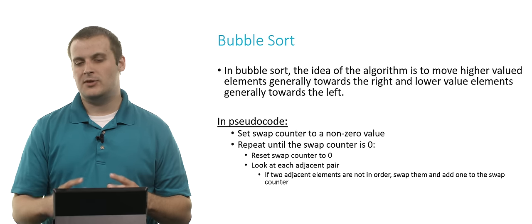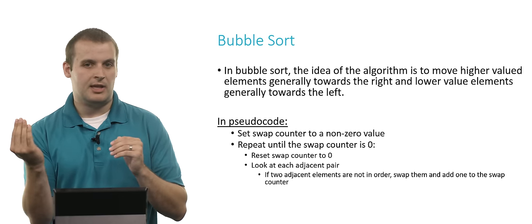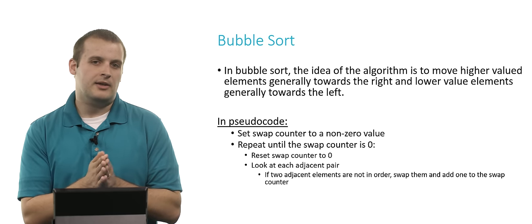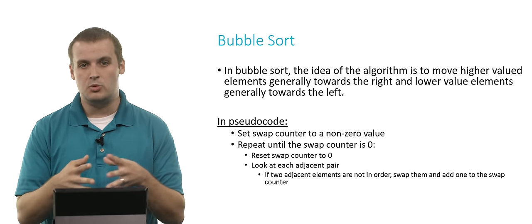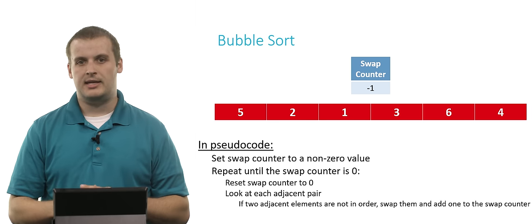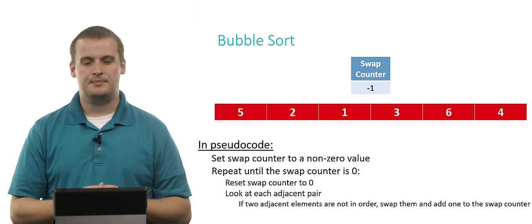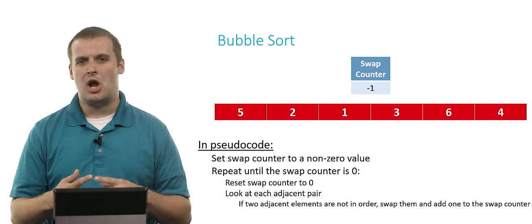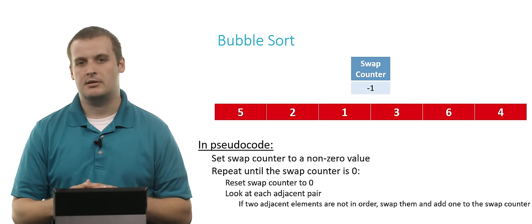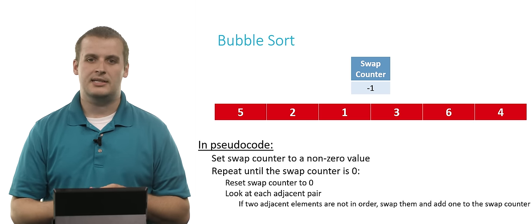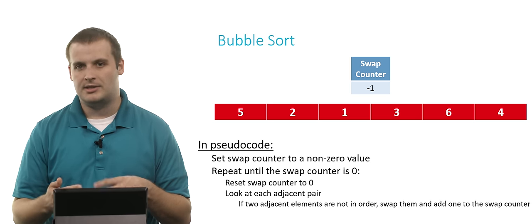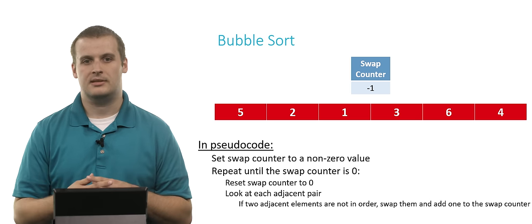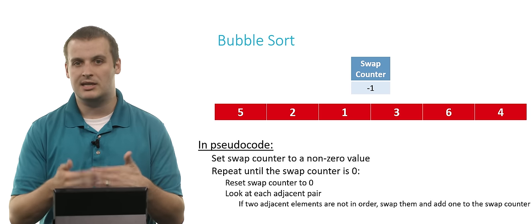Notice that this will move lower valued elements to the left and higher valued elements to the right, effectively doing what we want. Let's visualize how this might look using our array. We have an unsorted array here, indicated by all of the elements being in red. I set my swap counter to a non-zero value — I arbitrarily chose negative one. We want to repeat this process until the swap counter is zero, which is why we initialize it to a non-zero value; otherwise we wouldn't even begin.